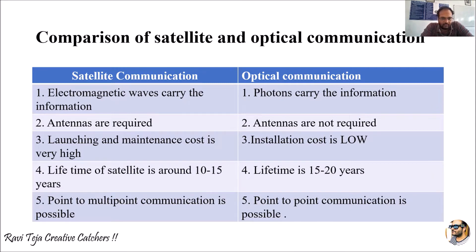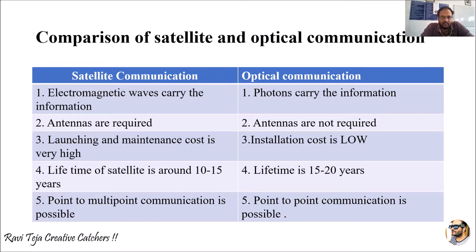In satellite communication, antennas are required to transmit the signal from one point to another, and satellite communications are majorly dependent on particular antennas. In optical communication, since it is wired and information is transmitted through light, antennas are not required at all.